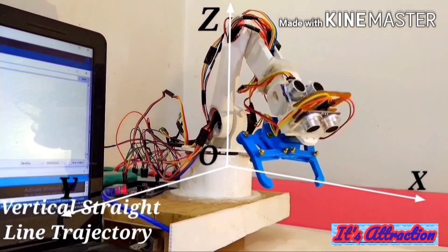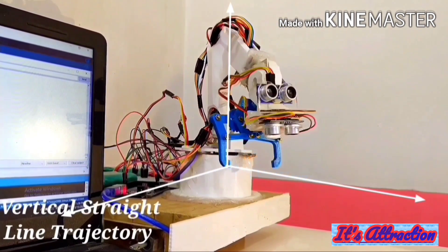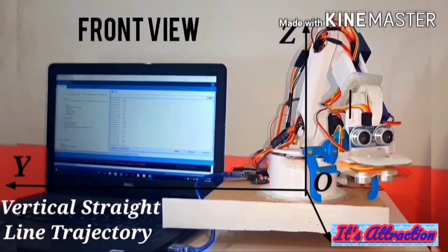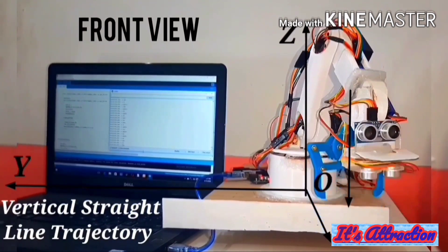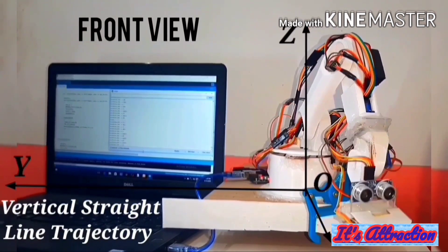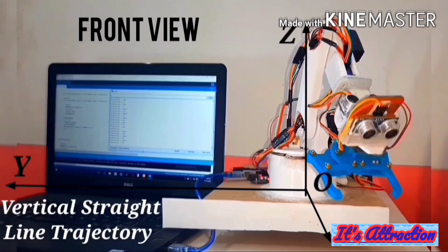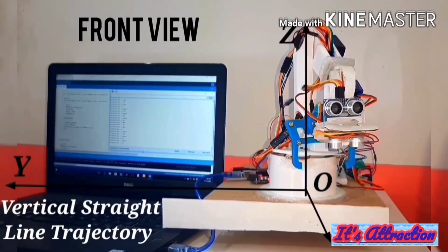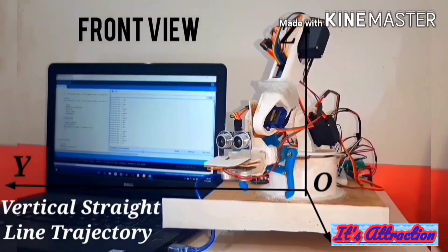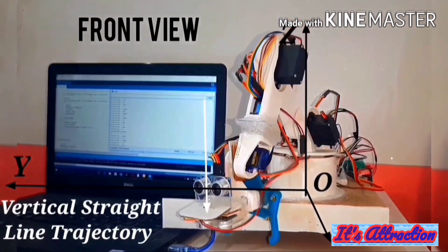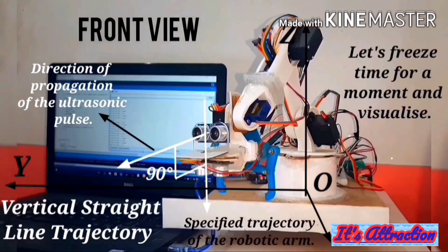The ultrasonic pulse generated by that sensor propagates through space parallel to the XY plane, and hence this motion of the five axis robotic arm can be used to determine the height of objects which lie in the vicinity of the arm. So let's freeze the time for a moment and get the feel of what exactly happens in space.